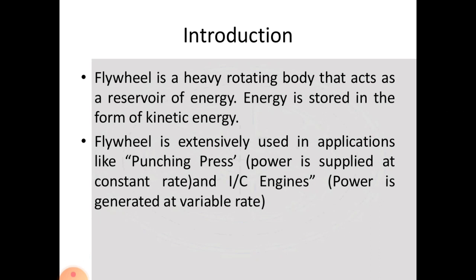Flywheel is used where there are fluctuations from cyclic variation. For example, in an IC engine — a 4-stroke cycle — in one cycle there are intake, compression, power, and exhaust strokes, so in a cycle there is not constant power supply. So in the cycle there are power variations.